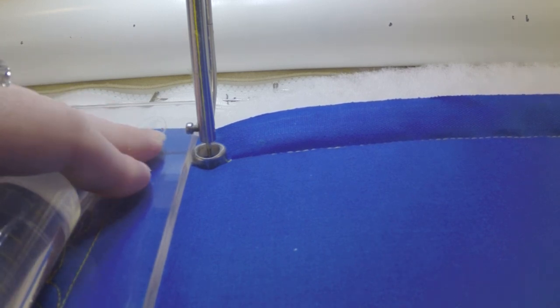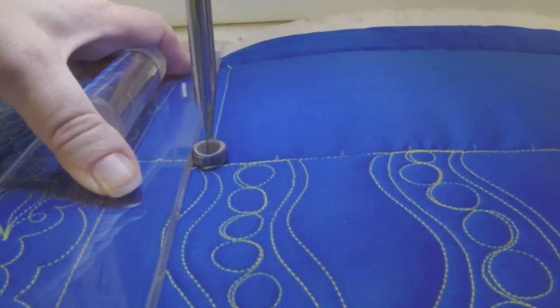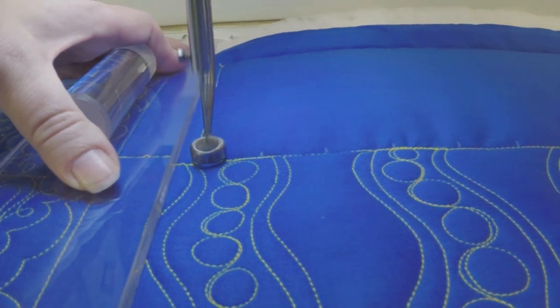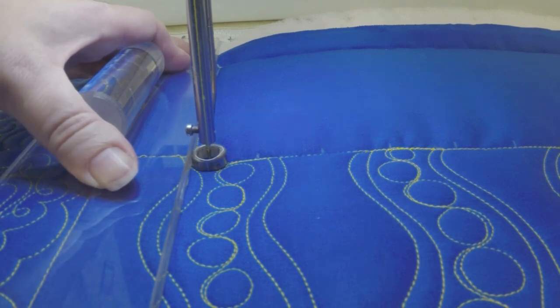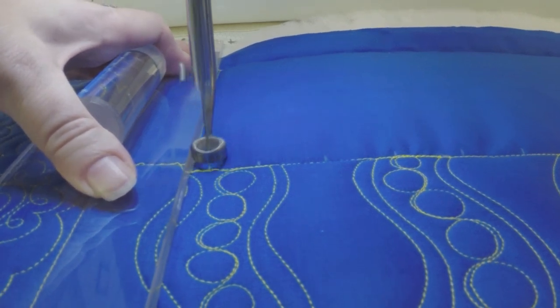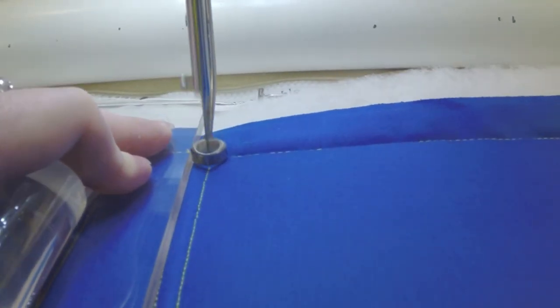I'm holding my ruler with my non-dominant hand. I'm going to come down the edge of that ruler in a straight line, and then I'm going to move across the ditch until the edge of my hopping foot is up against the line that I just sewed. I'm going to move my ruler over onto that line I just sewed and head right back up so that it's a quarter of an inch away from the line that I just did.